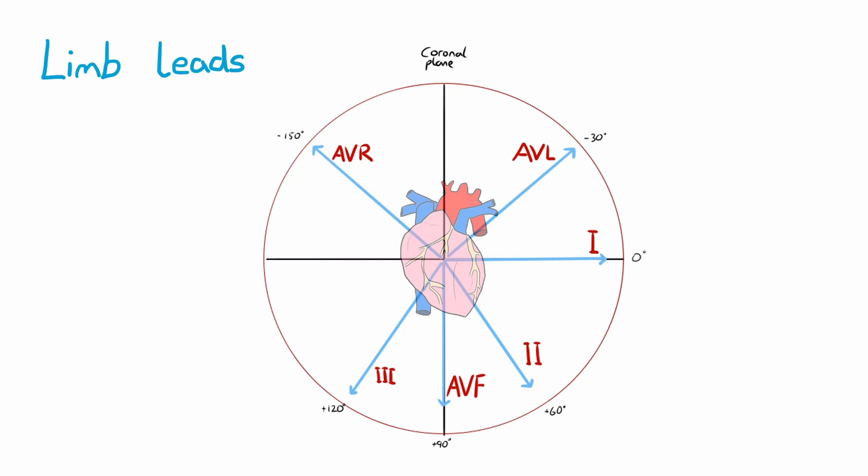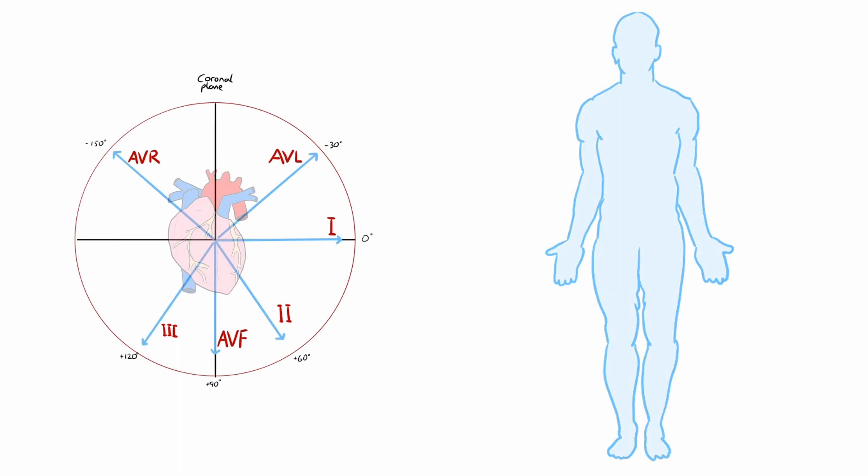For example, lead 2 is measuring electrical activity in the direction of 60 degrees in the coronal plane, which is achieved by comparing electrical activity at electrodes in the right arm and left leg. Again, you don't have to memorize the specifics of this, but just try to understand the underlying principle that each limb lead is measuring electrical activity in a different angle by using a different combination of the various electrodes placed on the skin.